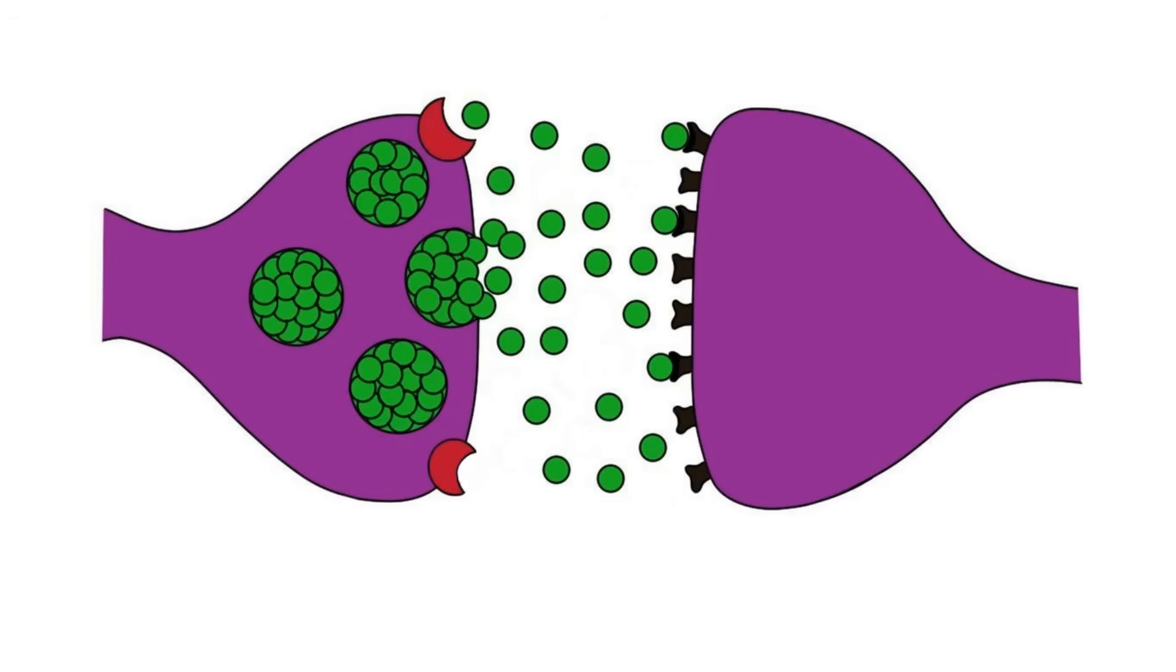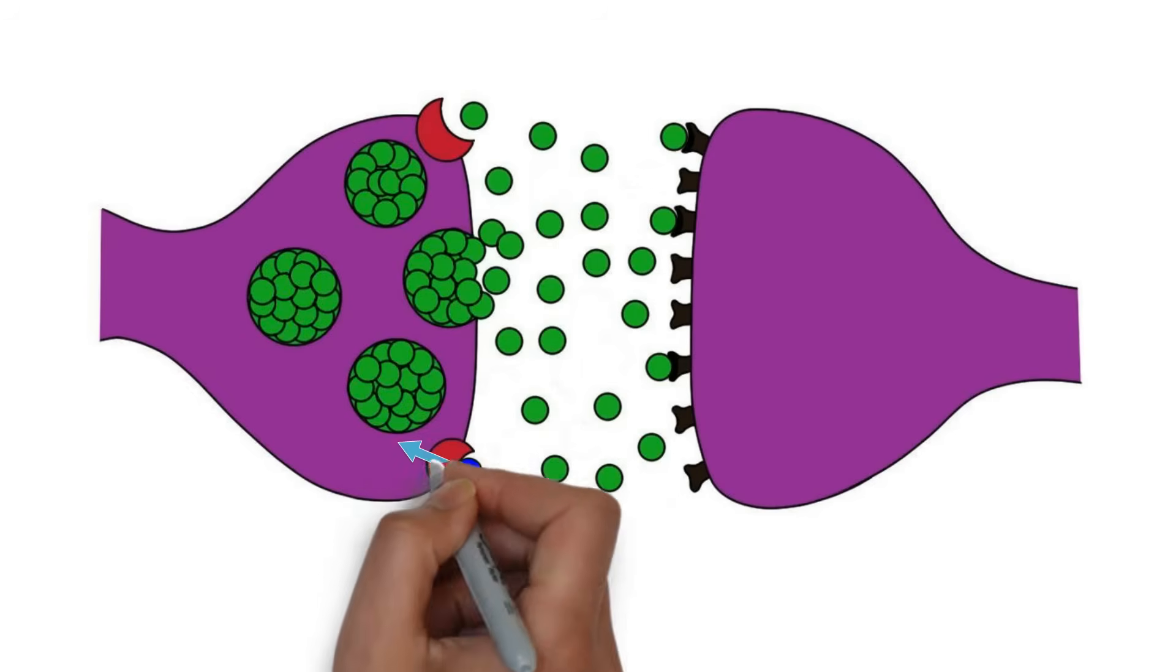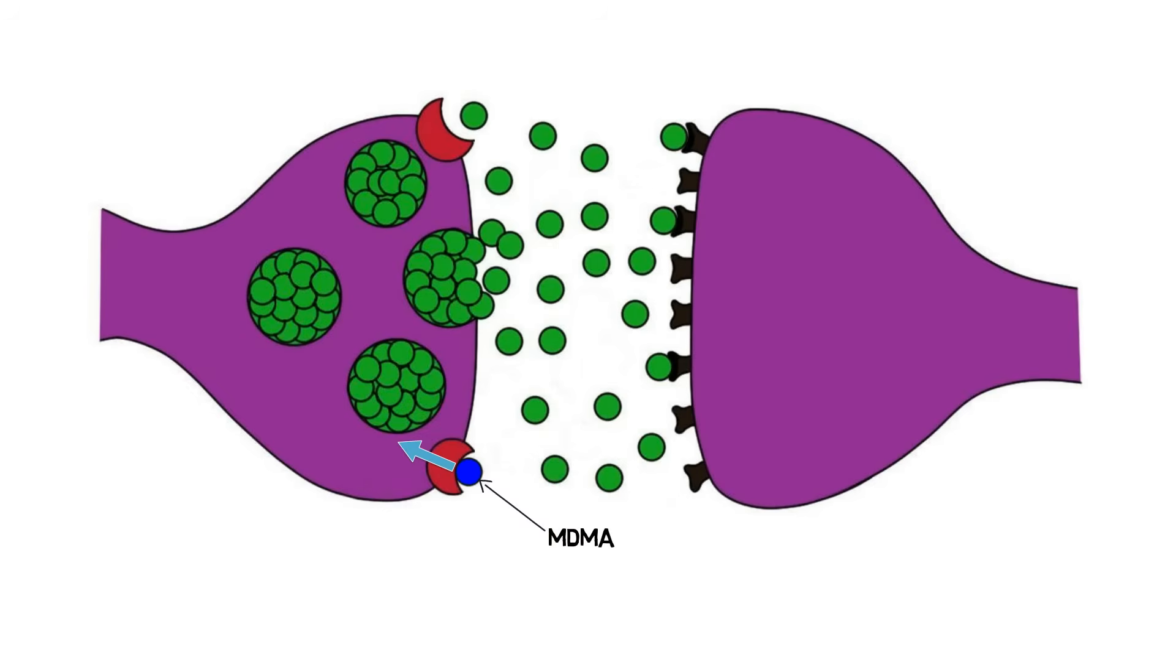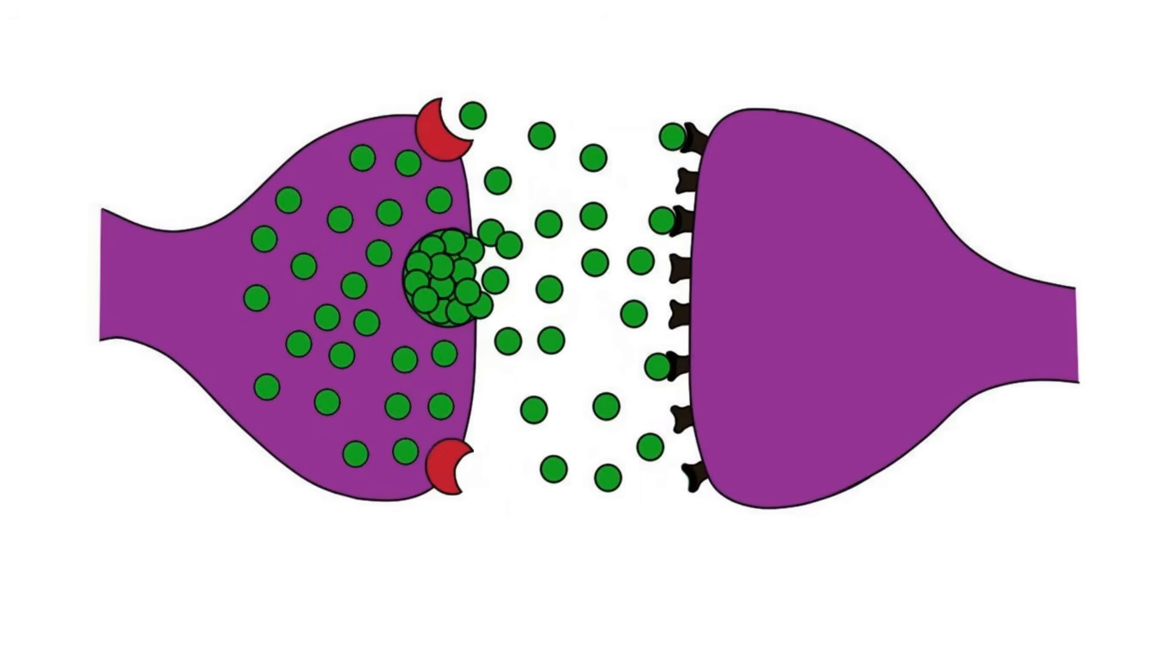MDMA also uses transporter proteins to enter neurons. Once inside, MDMA disrupts the storage of neurotransmitters in synaptic vesicles, causing the buildup of serotonin, dopamine, and norepinephrine inside neurons.